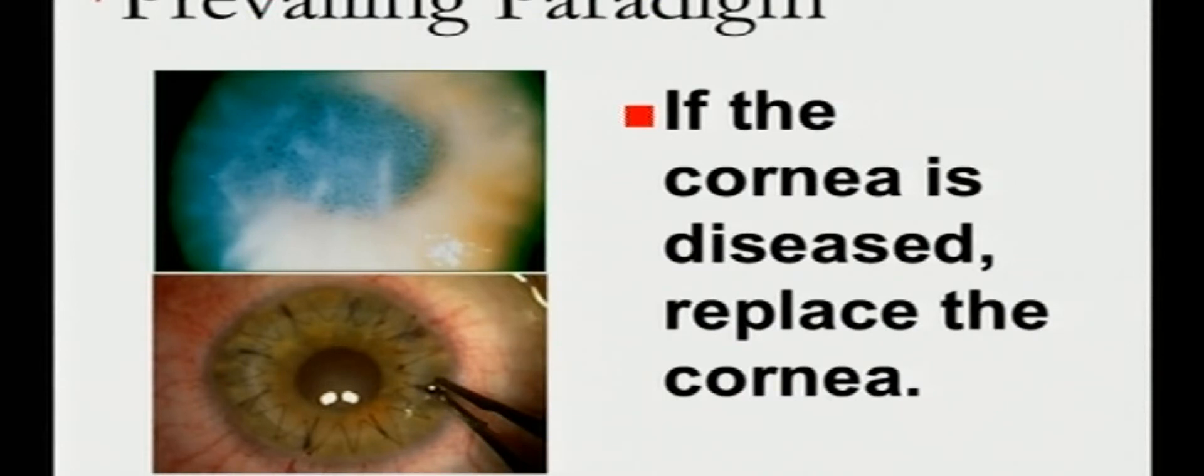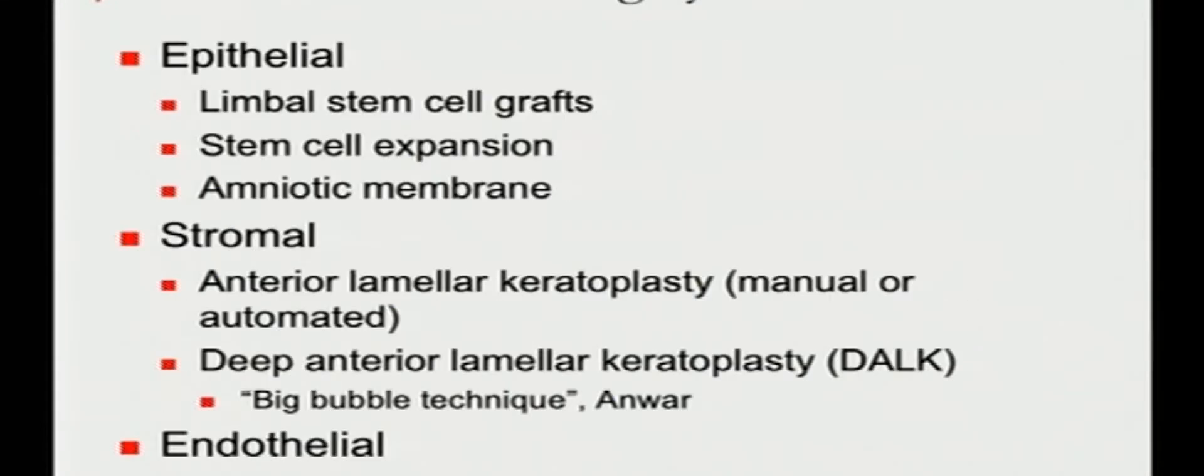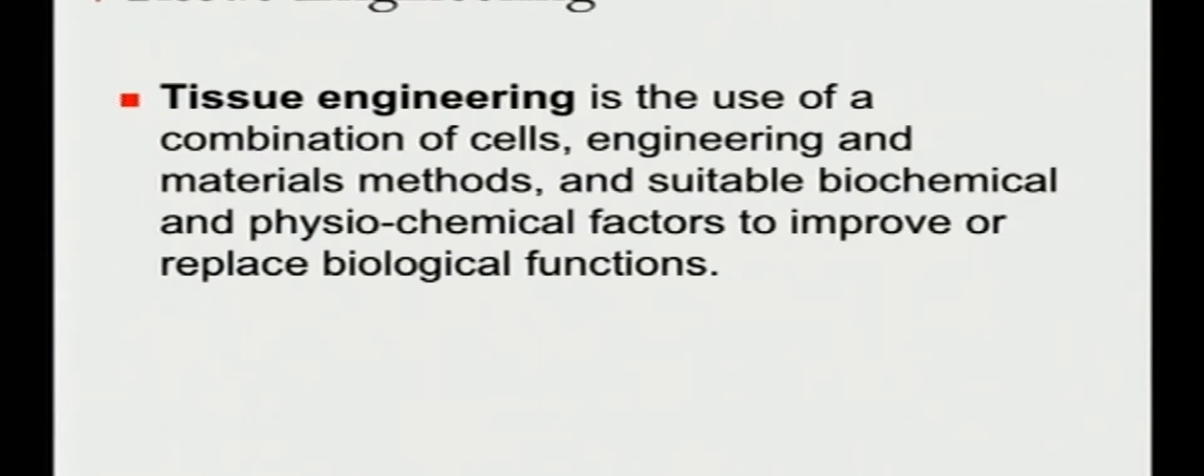In the past, when the cornea was diseased, we replaced the entire cornea. Now we think that if one part of the cornea is diseased, well, let's repair that particular part. So the idea of selective surgery is important. Of course we do selective stromal surgery with lamellar keratoplasty and endothelial keratoplasty, but in this case we're going to talk about selective corneal interventions of the epithelium related to limbal stem cell grafts, stem cell expansion, and using different sorts of biomaterials.